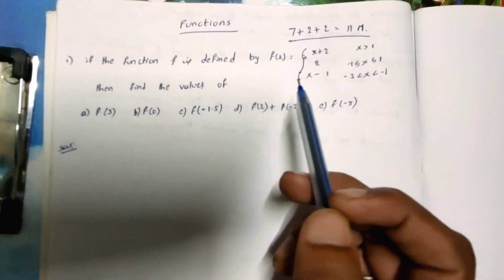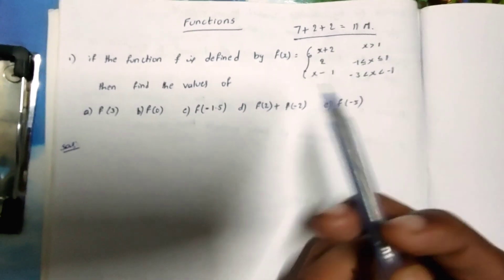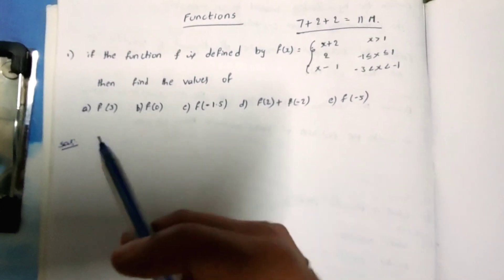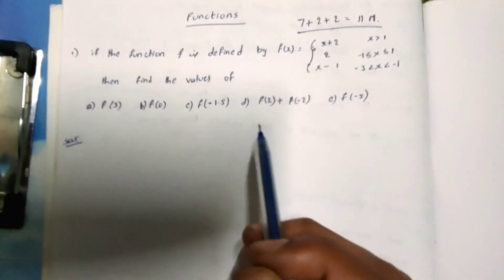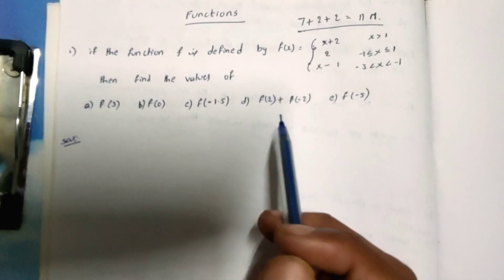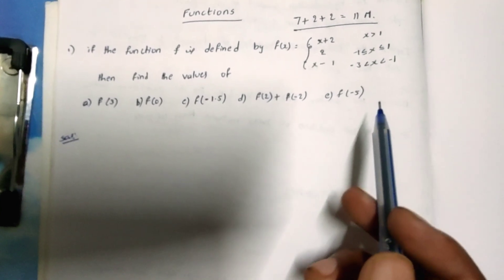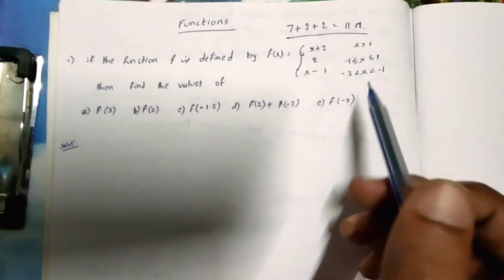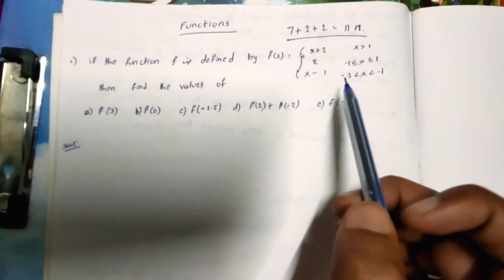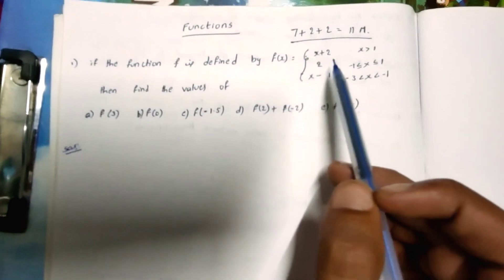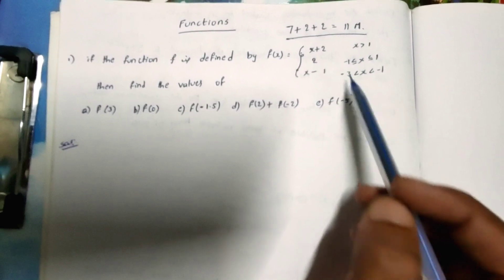If the function f is defined by f of x equal to a piecewise equation, then find the values of f of 3, f of 0, f of minus 1.5, f of 2 plus f of minus 2, and f of minus 5. We have a function here: x plus 2 and x minus 2.